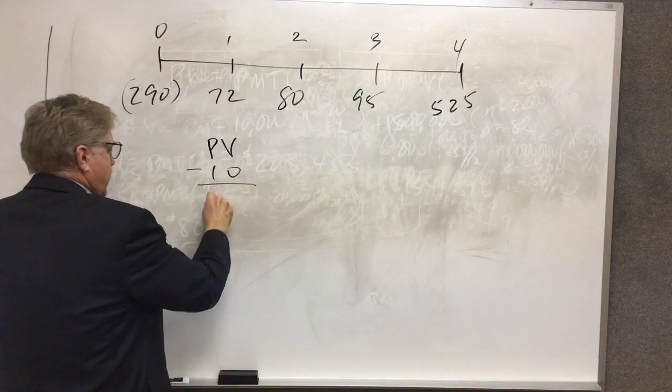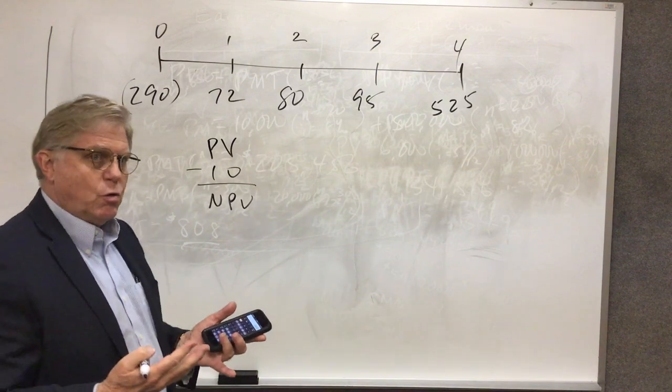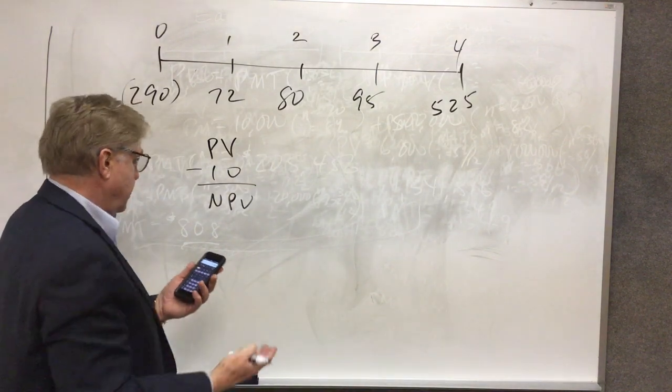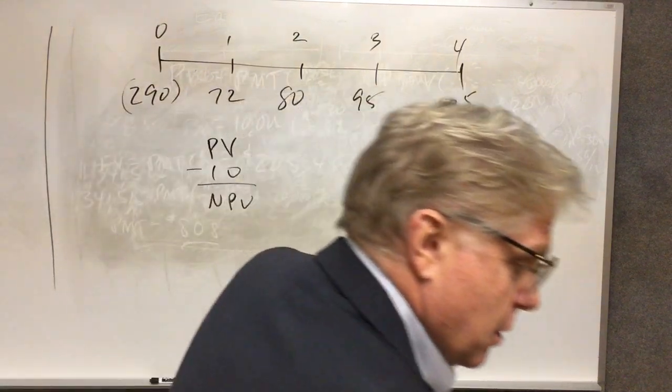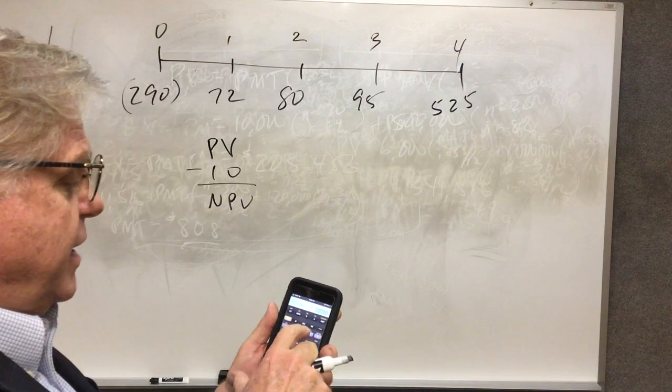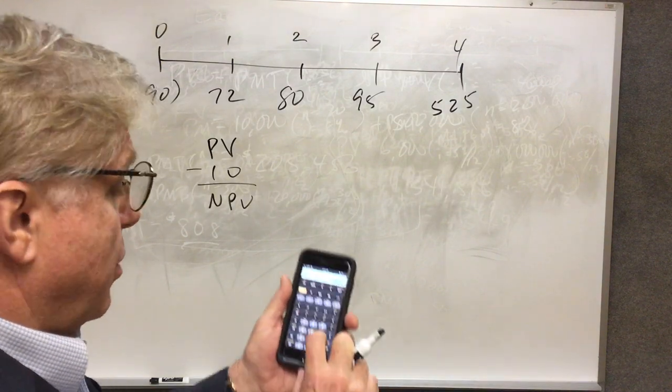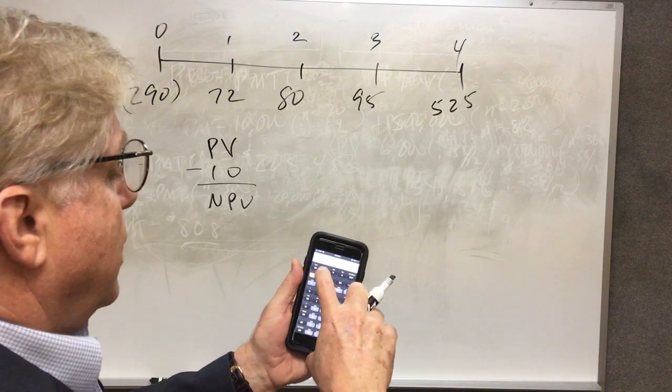In other words, it's what that investment is worth above and beyond its cost. I'm going to solve here using a 25% required rate of return. When I press that NPV key, the first thing it does is prompt me for a required rate of return. 25, I enter that.